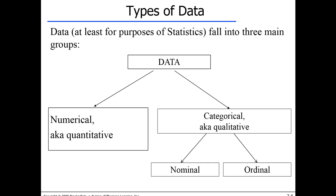Examples of numerical data include people's heights measured in feet and inches, weight, volume, temperature, amounts of money in dollars and cents, and miles per gallon. These are things you can measure using a timer, chronometer, ruler, or scale. Numerical data is also called quantitative data, from the word quantity.